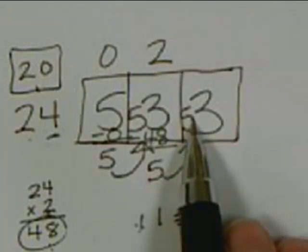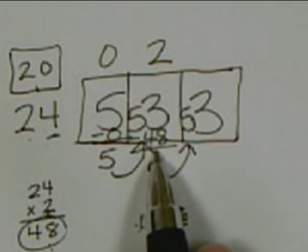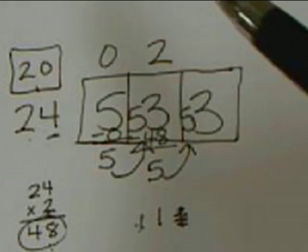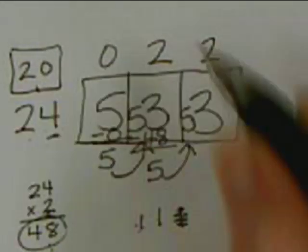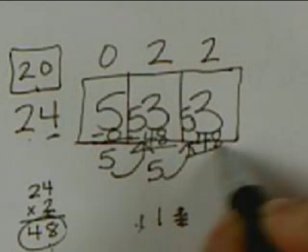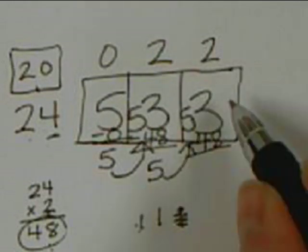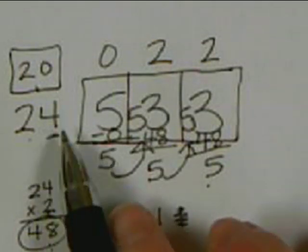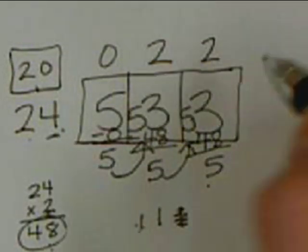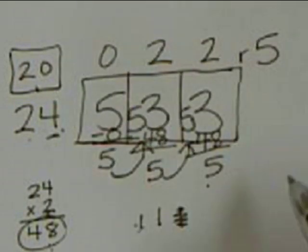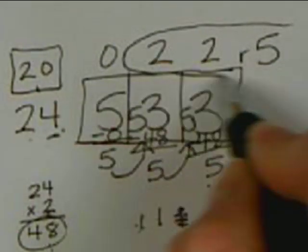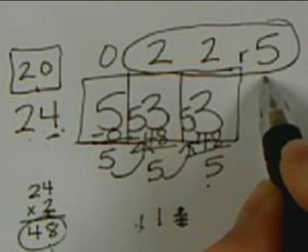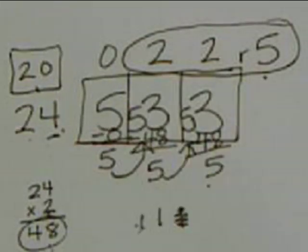Now for this problem, it's 53 again. Well, they already did it for this problem, so again, they should say 2 times 24 is 48. That's as close as I'm going to get. 53 minus 48 is 5. Again, 5 is smaller than 24, so my remainder is going to be 5. So my quotient for this problem is 22 remainder of 5. Okay, let's look at another example.